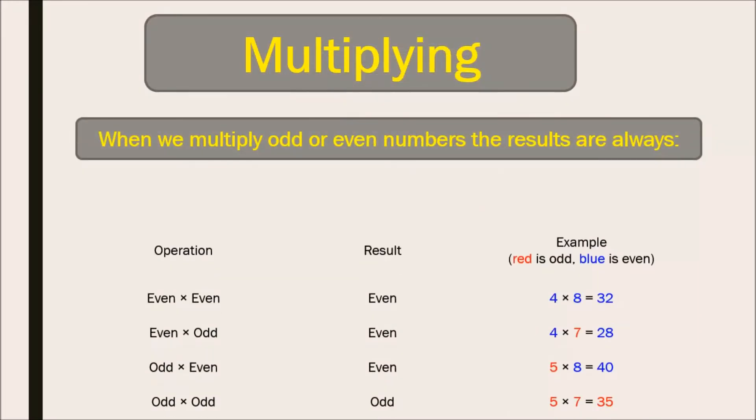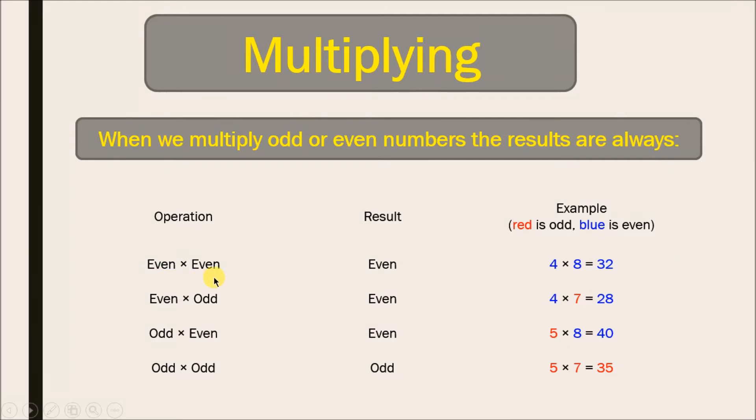Now let's see when we multiply odd and even numbers what we get. Even into even is even. For example, four into eight is thirty-two. Even into odd is even. Four into seven is twenty-eight. Odd into even is even. Five into eight is forty. Odd into odd is odd. For example, five into seven is thirty-five.